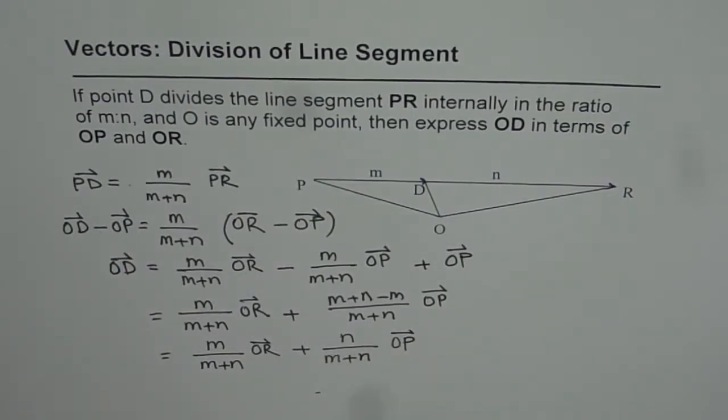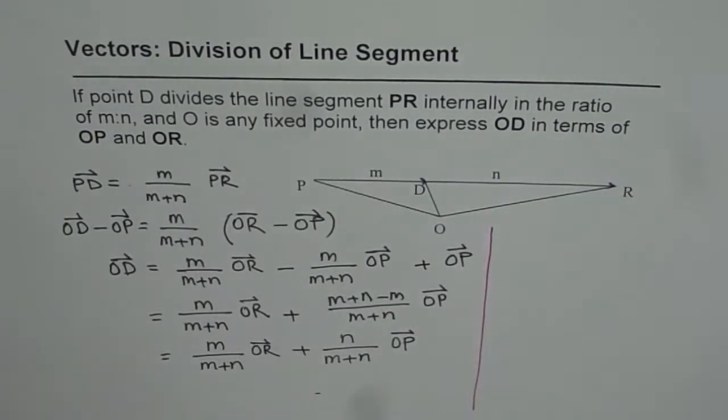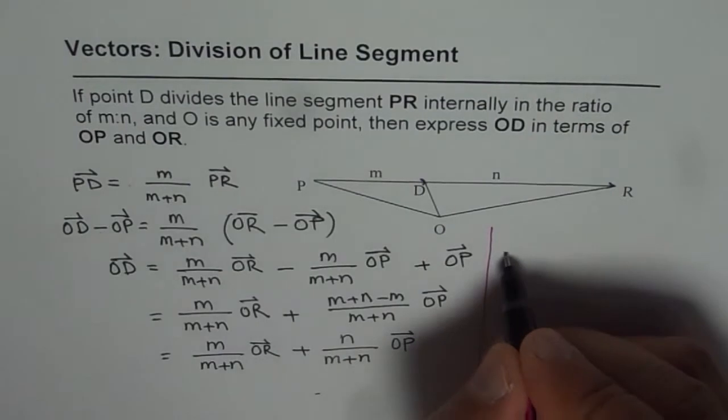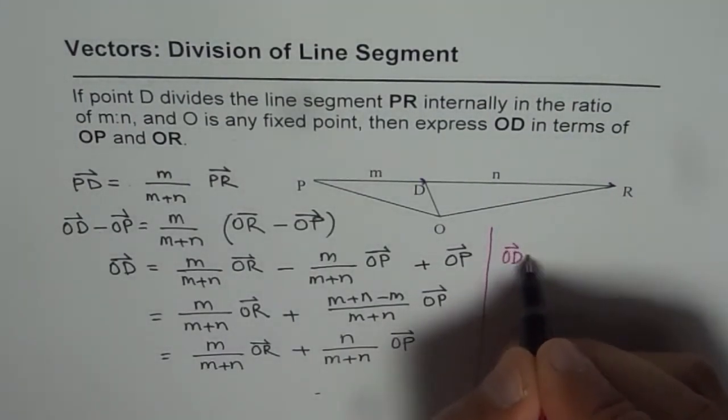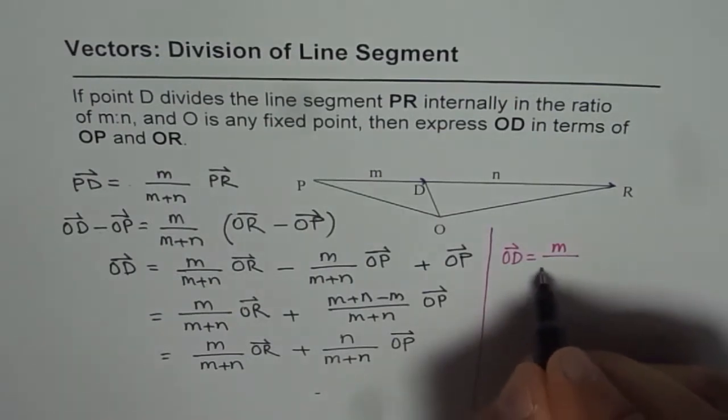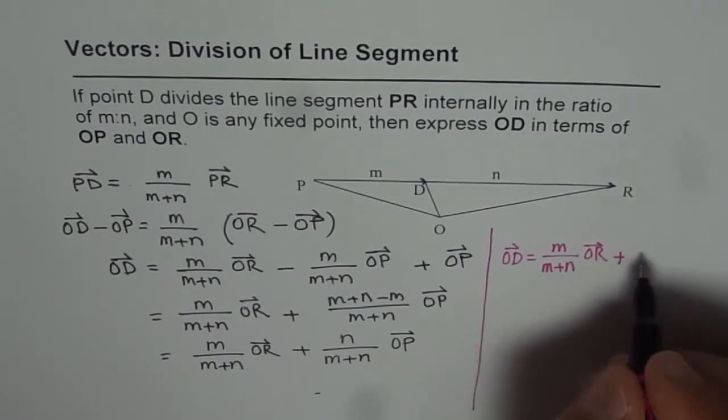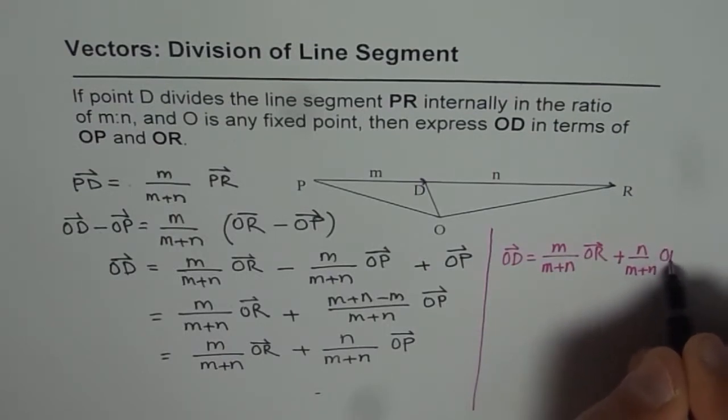So that's the general formula. It finds wide application in vectors and therefore we should highlight it. OD equals M over M plus N times OR plus N over M plus N times OP.